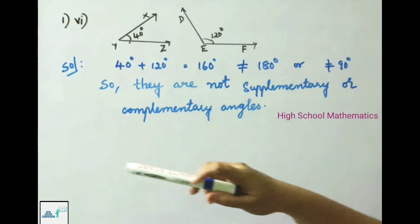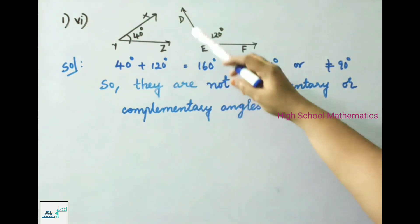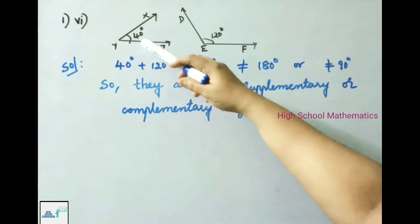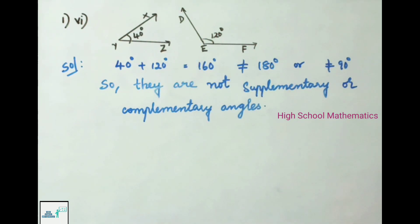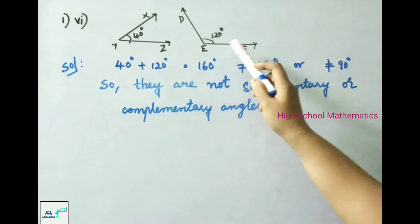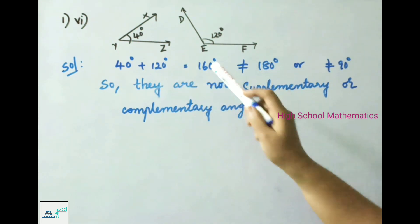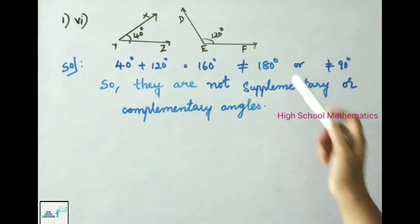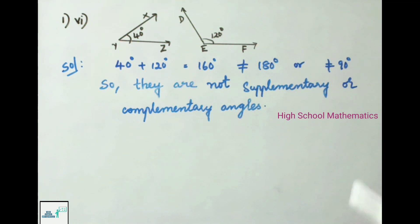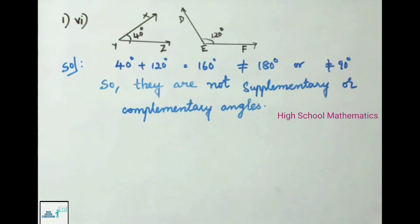Sixth pair: angle XYZ is 40 degrees and angle DEF is 120 degrees. The sum of those two angles is 160 degrees, which is not equal to 180 degrees or 90 degrees, so they are neither supplementary nor complementary angles.